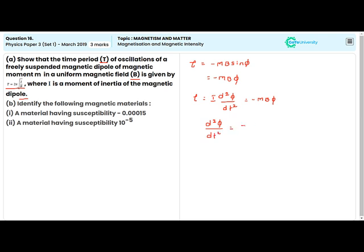Compare it with the equation of angular simple harmonic motion. If I am going to compare this equation, then this becomes d²φ/dt² is equal to minus ω² times φ.